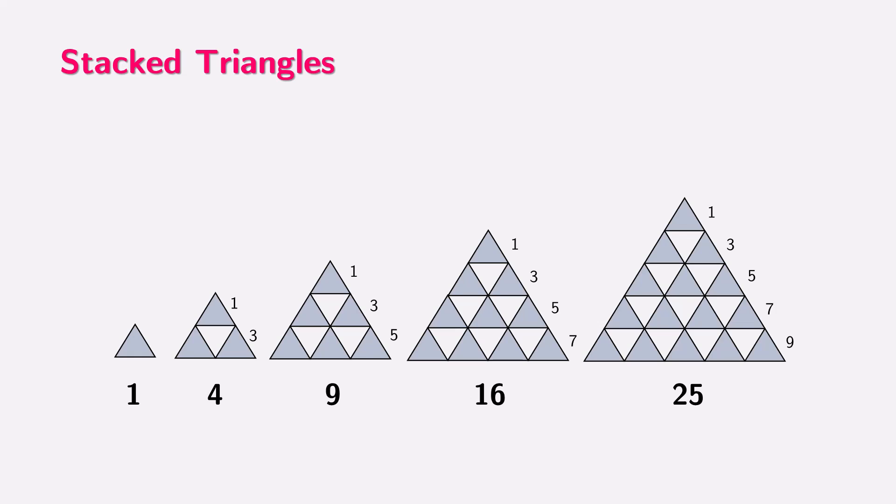Let's explore this interesting arrangement of stacked triangles. We start with a single small triangle. In the next step, we add three more triangles directly beneath it. Then, we add five more triangles in the third step, and seven in the fourth, and so on. If we observe closely, the number of triangles added in each new row follows an odd number pattern.